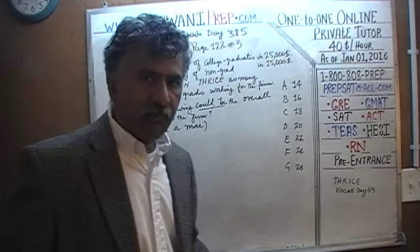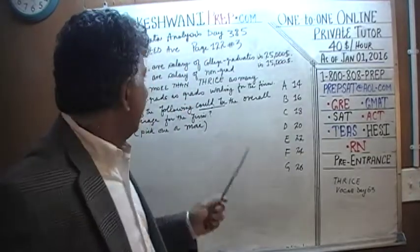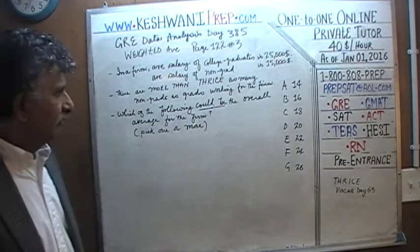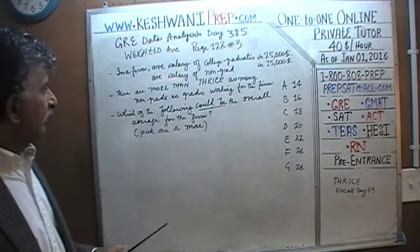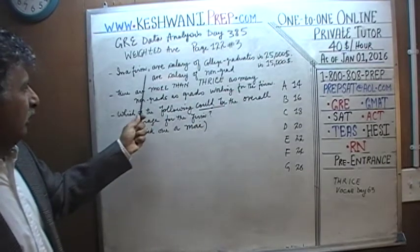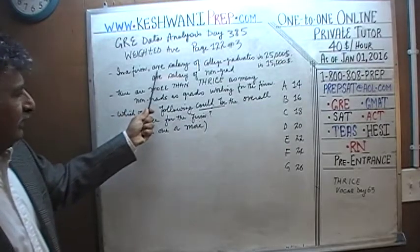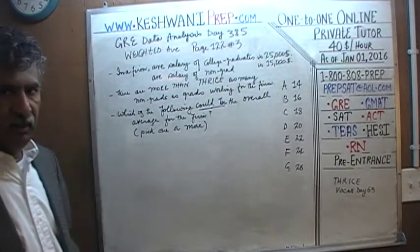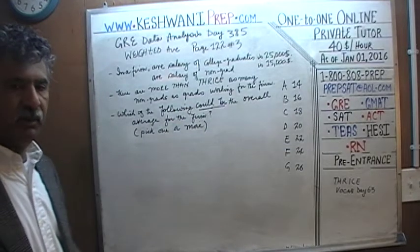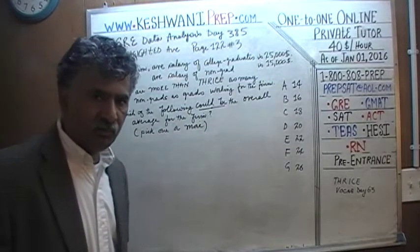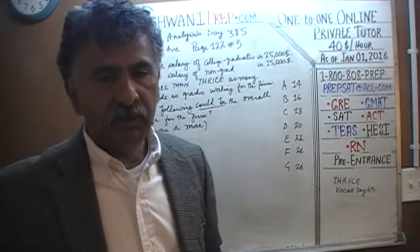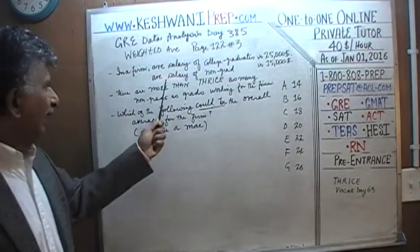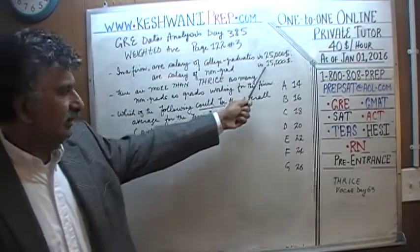Here is how the problem goes. In a firm, the average salary of college graduates is $25,000. Anybody who has a college degree in that firm — if you look at them as one group — and the people who do not have a college degree, the non-graduates, their average salary is $15,000.